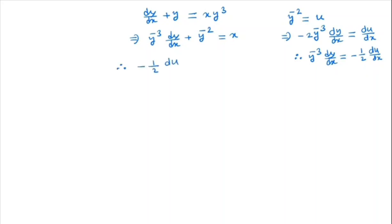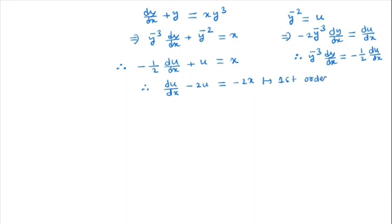So we have minus one-half · du/dx + u = x. By simplifying, we get du/dx minus 2u = minus 2x. Here we get a first-order linear ODE.